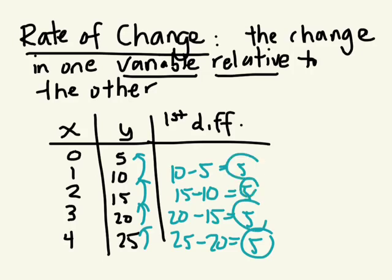We know that the first differences are all 5, which means that the rate of change would also be 5. Right, the rate at which this is changing is by 5. For every increase of 1, it changes by 5, right?